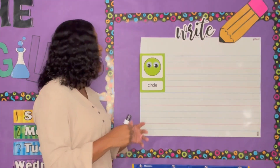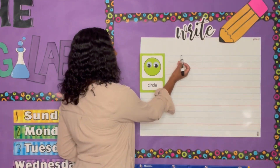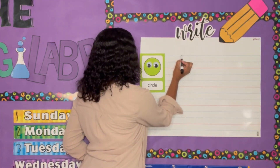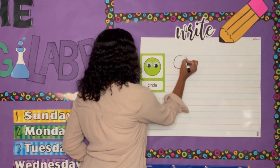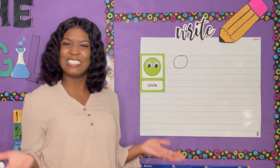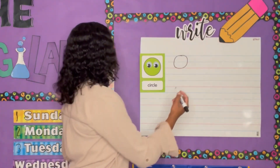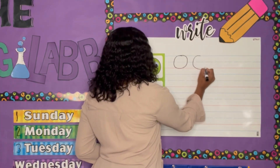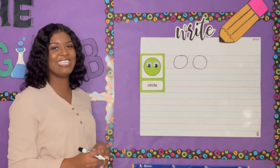Now as we said, we write from top to bottom. So I'm going to start on the top of my blue line to draw my circle. I'll start here and now go around and back up to the top of the line. Now it doesn't have to be perfect — just give it your best shot. Let's do another one. Start at the top and bring it around and back up. Good job.